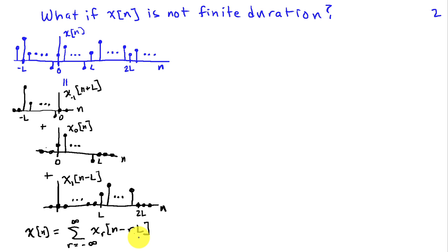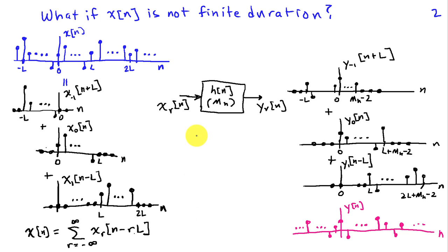The convolution operation is linear, so when I do the convolution of x with h, that's the same as doing the convolution of each of these individual blocks with h and adding up the result. So I can sketch that: instead of putting x into h to get y, I'm going to put x_r into h and get y_r. Each of these blocks x have length L and h has length m_h, so the convolution of the two is going to be length L + m_h - 1.